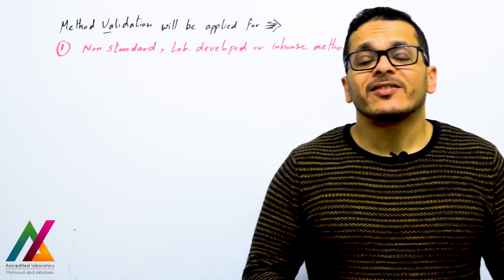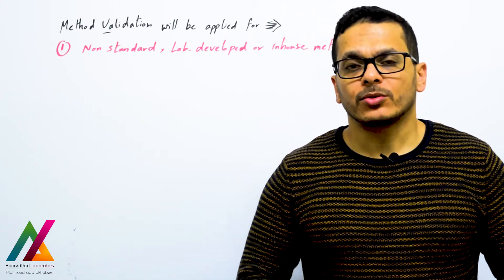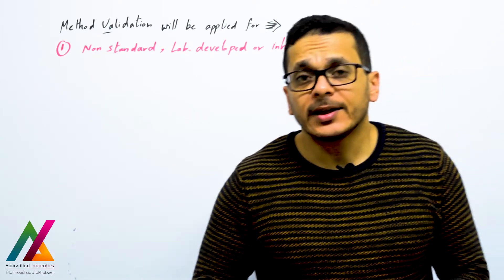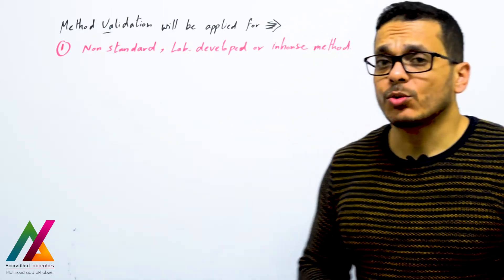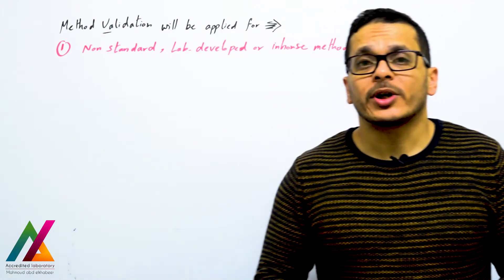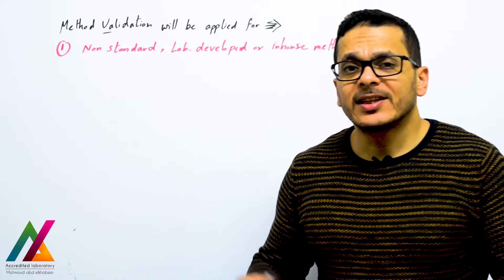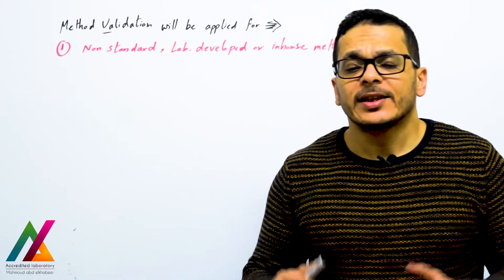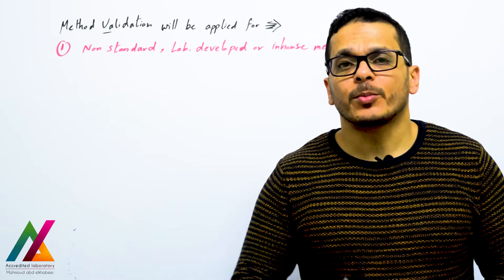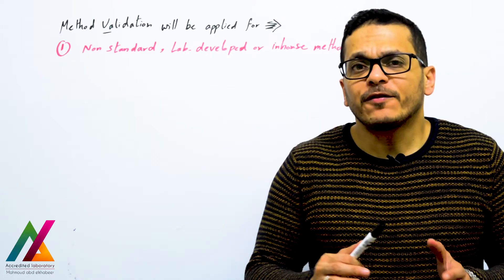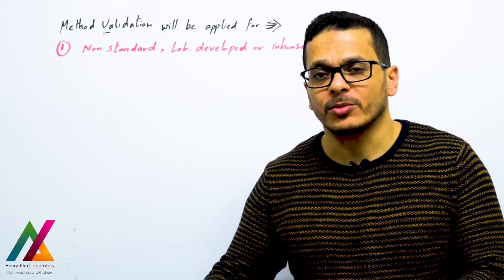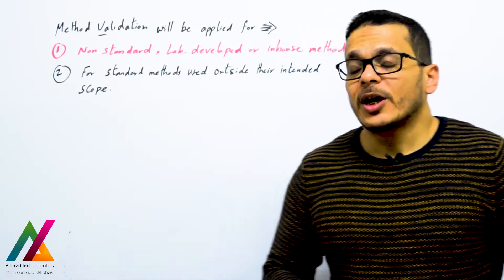In method validation you evaluate the performance of the method by evaluating method performance parameters. Method validation will be applied for non-standard, lab-developed, or in-house methods — methods that are developed inside the lab to analyze specific parameters when you don't have a reference method to analyze those parameters.